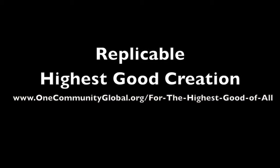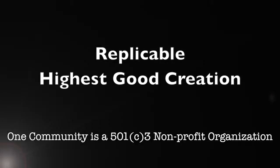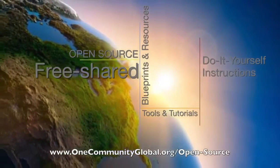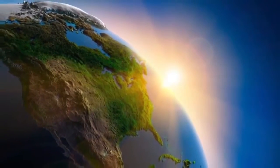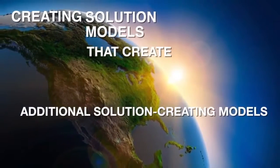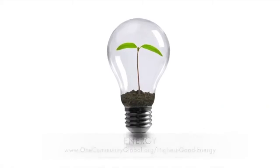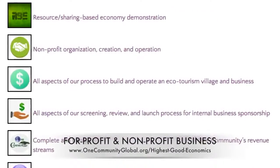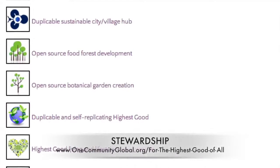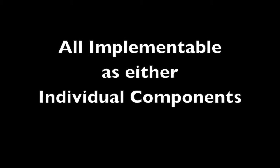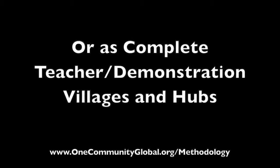Replicable Highest Good Creation — One Community Weekly Progress Update Number 88. One Community is a 501c3 non-profit organization. We are creating open source and free shared blueprints and resources, tools and tutorials, and do-it-yourself instructions for highest good living. Creating solution models that create additional solution-creating models in the service of all life on this planet. This includes highest good approaches to food, energy, housing, education, for-profit and non-profit business creation, society, and true Earth stewardship. We are creating all these things to be implementable as either individual components or as complete teacher demonstration villages and hubs.